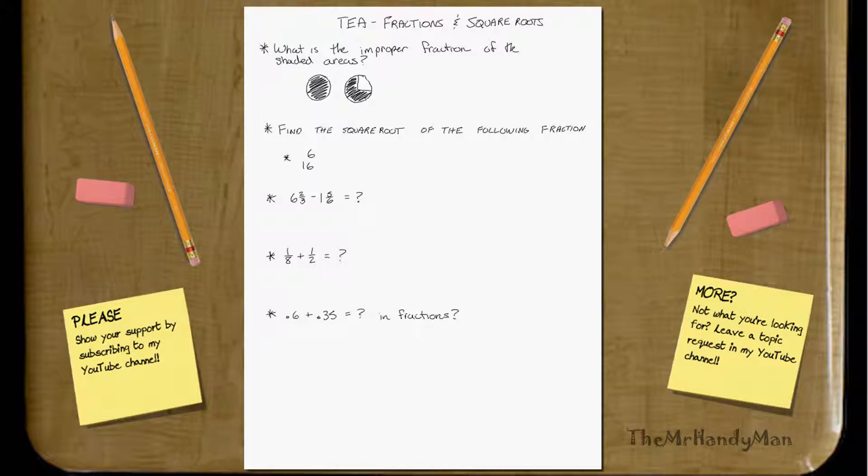This is T Fractions and Square Roots, and I'm just going to punch through a few examples for you. First one, what is the improper fraction of the shaded areas?